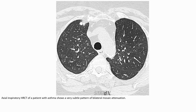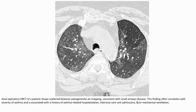On the axial HRCT of a patient with asthma, there is marked bilateral mosaic attenuation. On expiratory HRCT, scattered bilateral subsegmental air trapping is seen, consistent with small airway disease. This finding often correlates with the severity of asthma and is associated with asthma-related hospitalization, ICU admission, and/or mechanical ventilation.